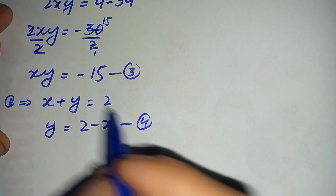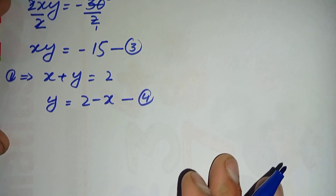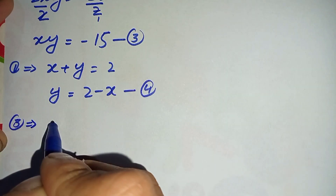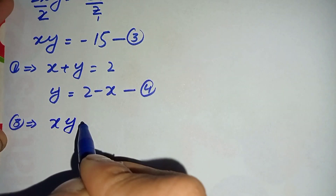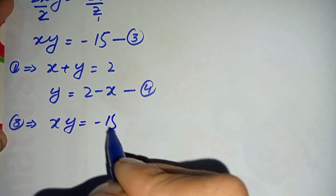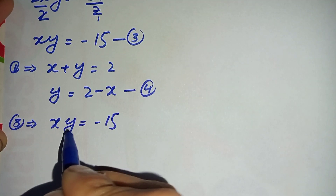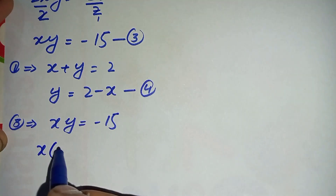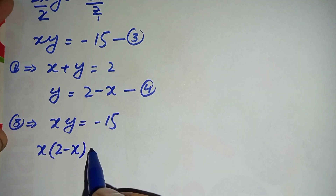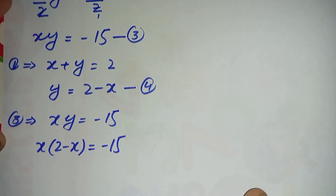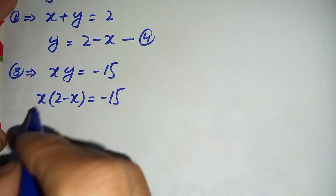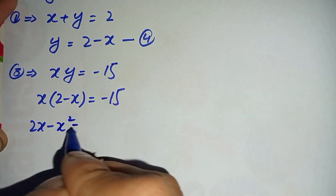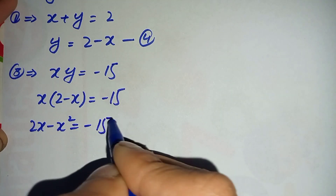Here we will substitute the value of y from equation number four into equation number three. Equation number three is xy is equal to minus 15, so replacing y we get x times (2 minus x) is equal to minus 15. This becomes 2x minus x squared is equal to minus 15.